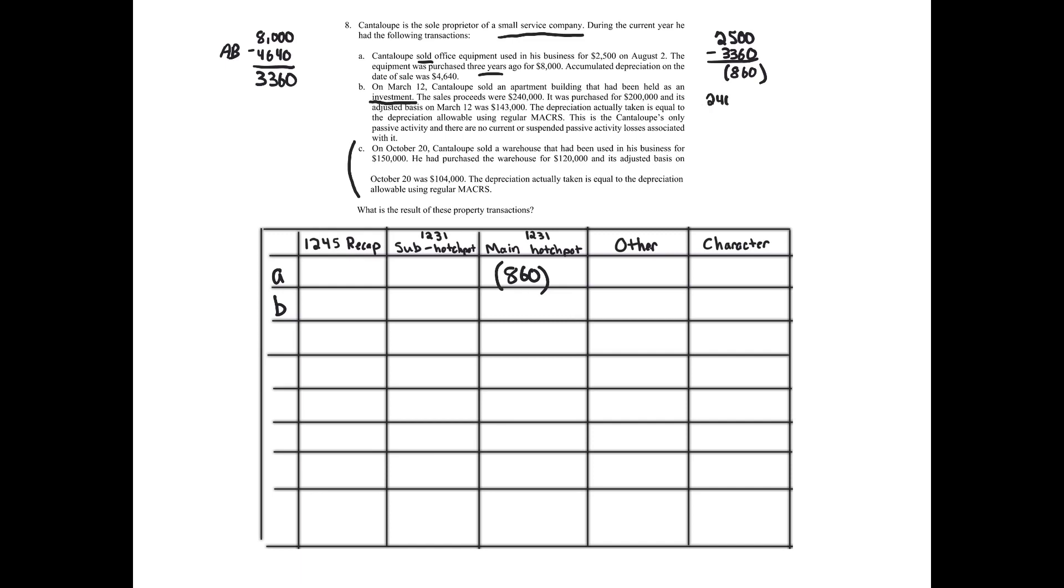So we got investment apartment building. Sales proceeds are $240,000. That's amount realized. It was purchased for $200,000. Adjusted basis is $143,000. So we have a $97,000 realized gain that's sold. So it's going to be recognized. So we're moving right to characterization, just like that. The depreciation actually taken is equal to the depreciation allowable using regular MACRS. That just means that, hey, Section 1250 doesn't apply because it's always been using the straight line method.